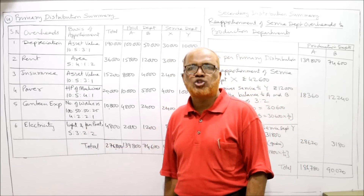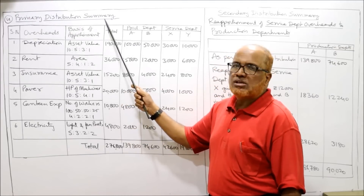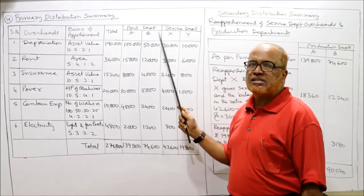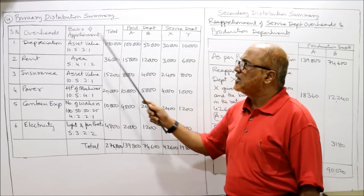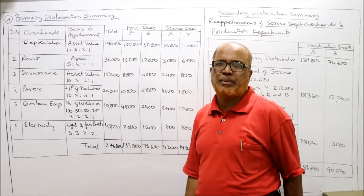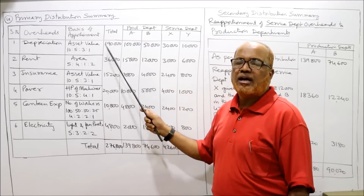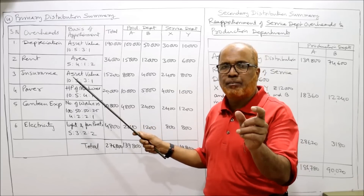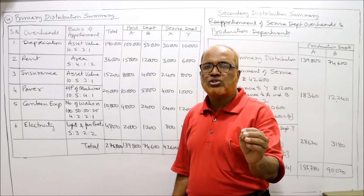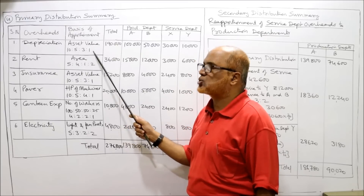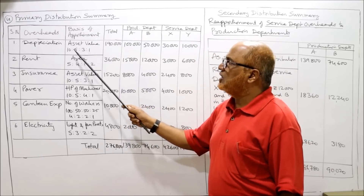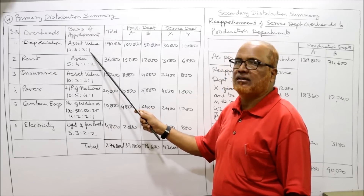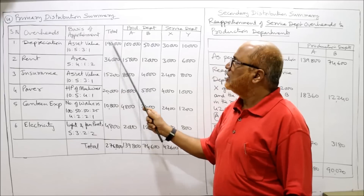The primary distribution summary has columns for departments A, B (production) and X, Y (service). Depreciation 1,90,000 is apportioned in the ratio of asset value: 10:5:3:1 (total 19) after simplification. So 1,90,000 × 10/19, × 5/19, × 3/19, × 1/19 gives the departmental shares. Rent 36,000 is apportioned in the ratio of area: 5:4:1:2 (total 12).